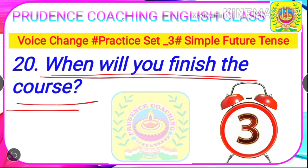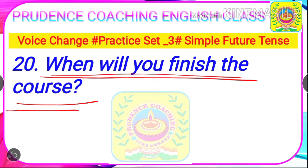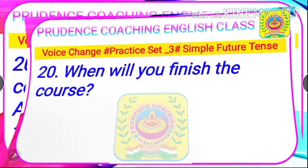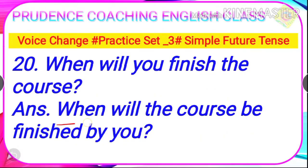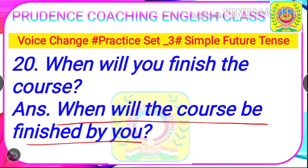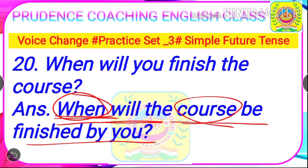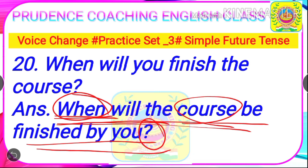Everybody is doing very well. Type your answer in the comment box and let us know how many answers are correct. The time is finished. Now the answer is: When will the course be finished by you? This is an interrogative sentence. When a WH word is given in the sentence, we will have to use the WH word. According to the subject, we will have to use 'will'. So: When will the course be finished by you? Don't forget to add the question mark.